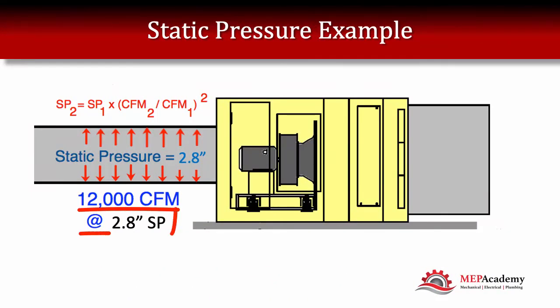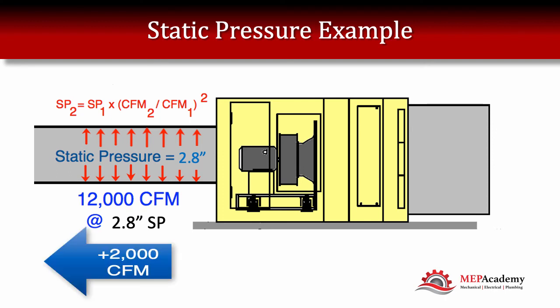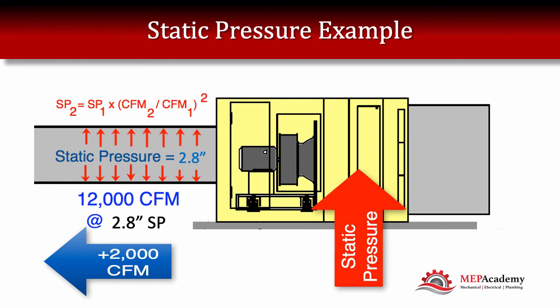We can see that the pressure went up because of the increased flow. With existing conditions of 10,000 CFM at 2 inches, by adding another 2,000 CFM, the static pressure went up to 2.88 inches. It's a basic formula: plug in your existing conditions and your new CFM to get your new static pressure.